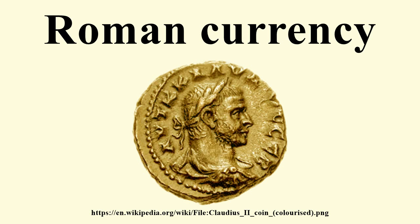Roman Empire, 27 BC to 476 AD: In 27 BC, the Roman Republic came to an end as Augustus ascended to the throne as the first emperor. Taking autocratic power, it soon became recognized that there was a link between the emperor's sovereignty and the production of coinage.